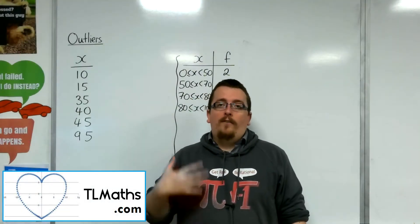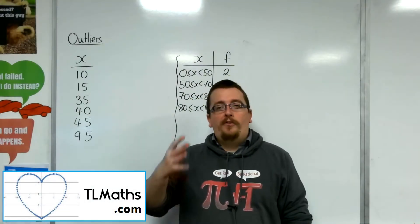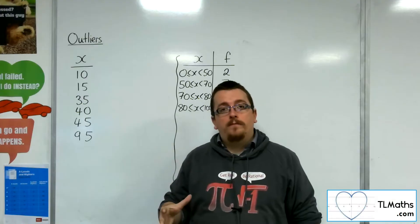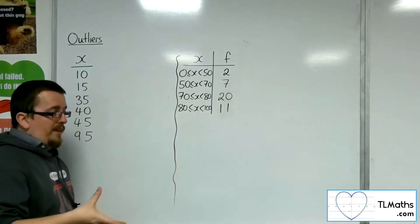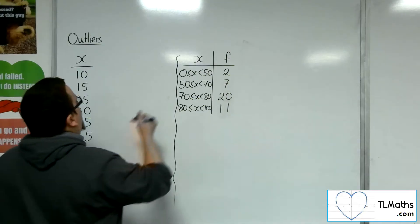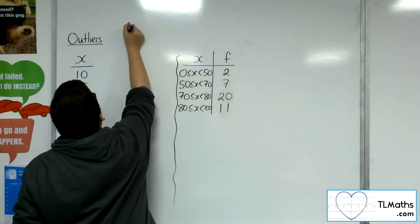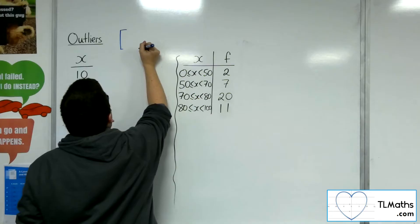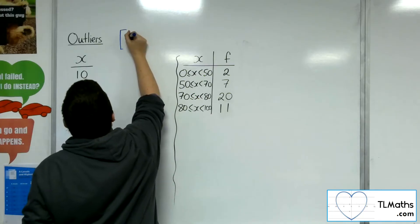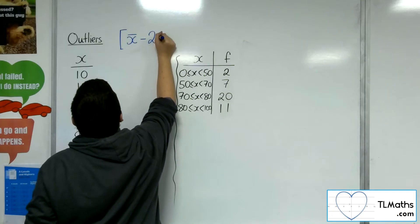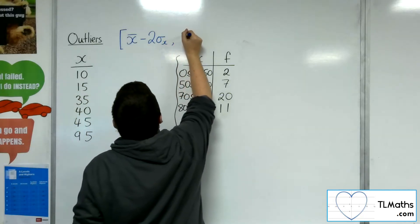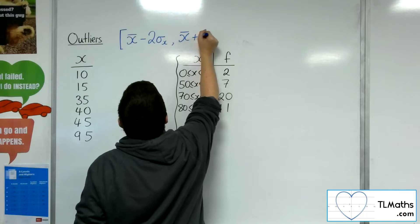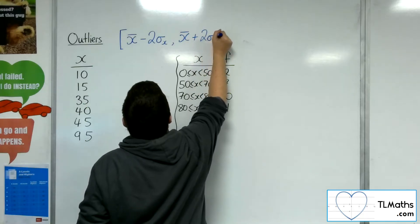The second way of identifying outliers uses the mean and standard deviation. The way to do it with the mean and standard deviation is you are looking at anything that is less than the mean, take away two lots of the standard deviation, and anything that is larger than the mean plus two lots of the standard deviation.